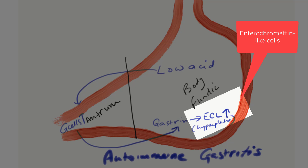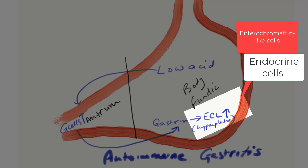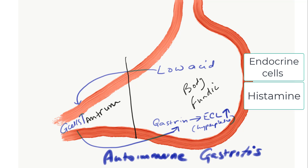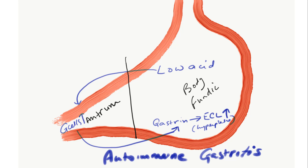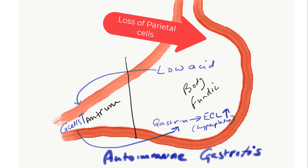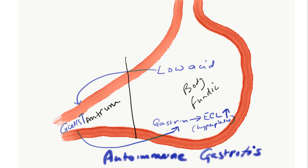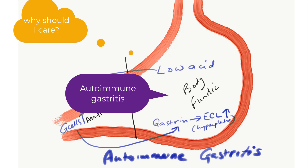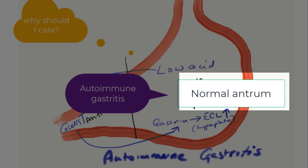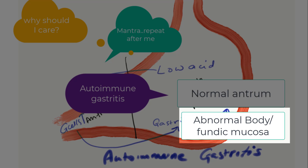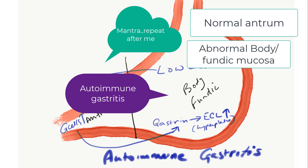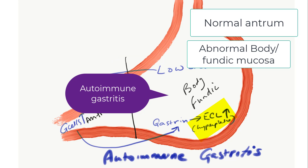ECL cells — enterochromaffin-like cells — are nothing but a very fancy name for an endocrine cell that produces histamine. All of this is futile because there simply can be no acid production because the parietal cells have either diminished in number or completely disappeared. So what does that mean for you as a pathologist? One: the gastric antrum is relatively normal — in fact, it's hard to identify G cell hyperplasia, which there is in the gastric antrum in these cases. In the body fundic mucosa, you see loss of parietal cells replaced by other stuff, and there is endocrine cell hyperplasia. Normal antrum, atrophy of the body fundic mucosa, and neuroendocrine cell hyperplasia — there you have it in a nutshell: autoimmune gastritis.